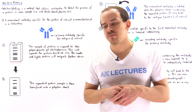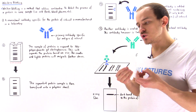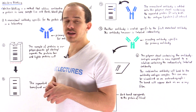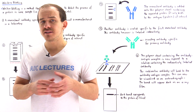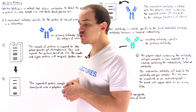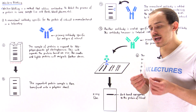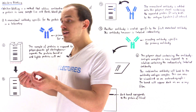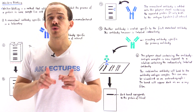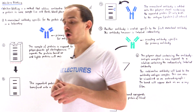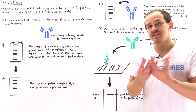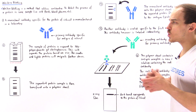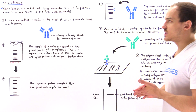Another method we can use in biochemistry to help locate a specific protein is Western blotting. Just like in the ELISA methods, Western blotting also utilizes antibodies. The entire point of a Western blot is to form a specific antibody that can bind onto the protein we want to locate, and when this binding takes place, it allows us to visualize where that protein is.